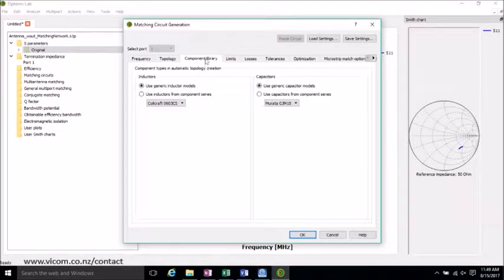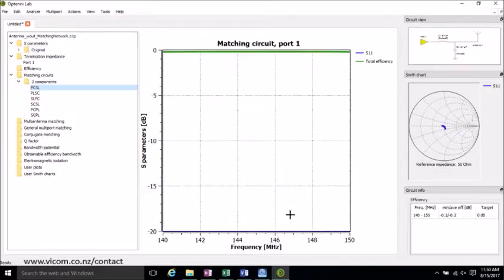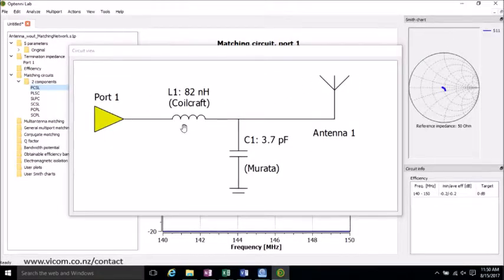Two components is fine for us. You can have as many as 10. And for components, I'll be using the Coilcraft and Murata capacitors and inductors. Click OK. And there we go. It's generated a matching circuit. And you can see this uses a series inductor of 82 nH and a parallel capacitor of 3.7 pF.